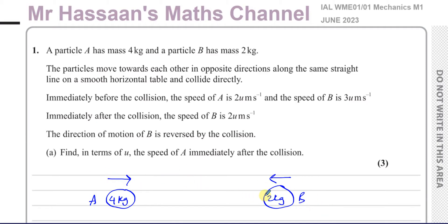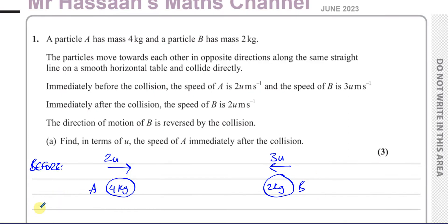I'm going to put the information about before the collision on top. Before, A is moving at 2u meters per second and B is moving at 3u meters per second — of course they're moving towards each other. After the collision, the speed of B is 2u meters per second, and the direction of motion of B is reversed, so B is now moving at 2u meters per second in the opposite direction — that is, towards the right according to our diagram.